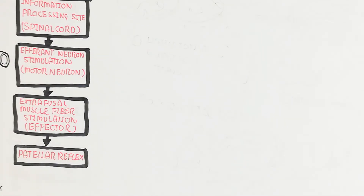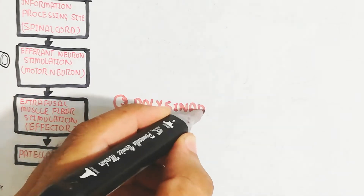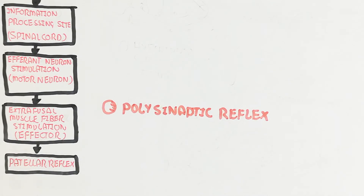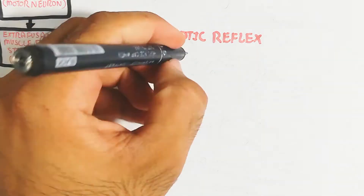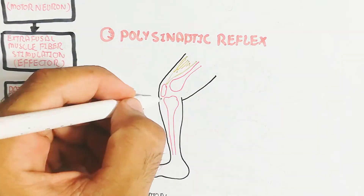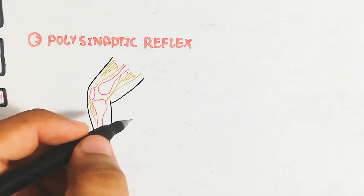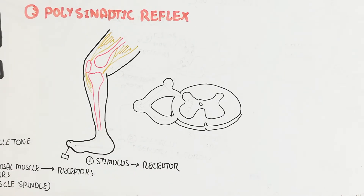Now we move from the monosynaptic patellar reflex to the polysynaptic reflex. Polysynaptic means more than one synapse — more than one neuromuscular junction. The stimulus leads to the receptor, then to the sensory (afferent) neuron.